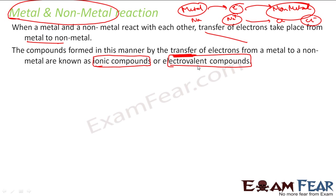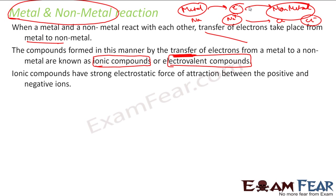Ionic compounds and electrovalent compounds are the same thing. They are formed where the transfer of electrons happens and a bond is created. Ionic compounds have a strong electrostatic force of attraction between the positive and negative ions.